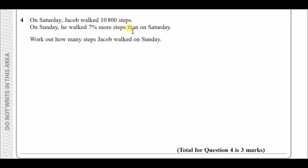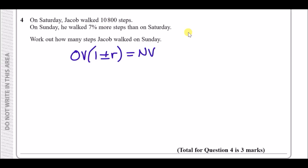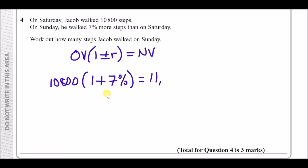Number four: on Saturday Jacob walked 10,800 steps. The next day he walked 7% more than on Saturday — work out how many steps Jacob walked on Sunday. Using the formula: original value × (1 + rate) = new value. So 10,800 × 1.07 = 11,556 steps.